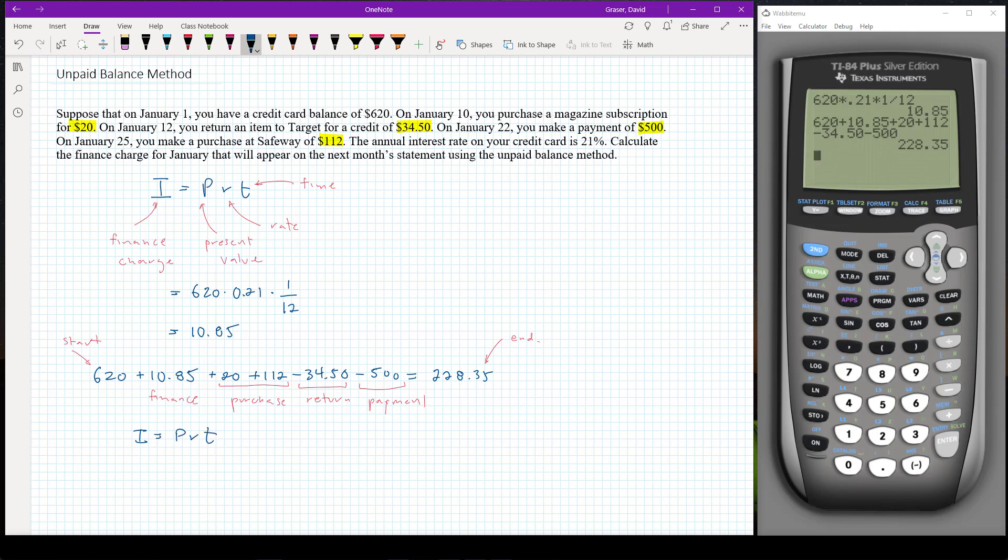So now the amount that's outstanding is the two hundred and twenty eight dollars and thirty five cents. We're going to have the twenty one percent interest rate. So times zero point two one. And we're going to go for another month.